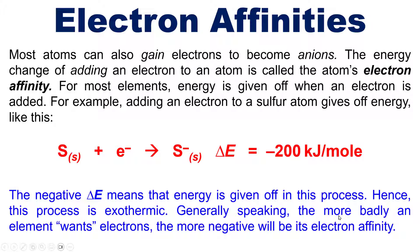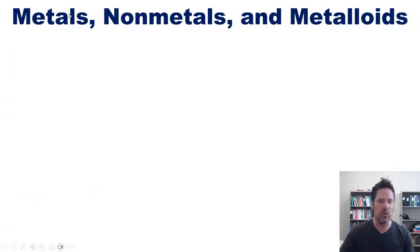Generally speaking, the more badly an element wants electrons, the more negative or energetically favorable its electron affinity will be. We'll now leave this subject and move on to discussing the general differences between metals, nonmetals, and metalloids.